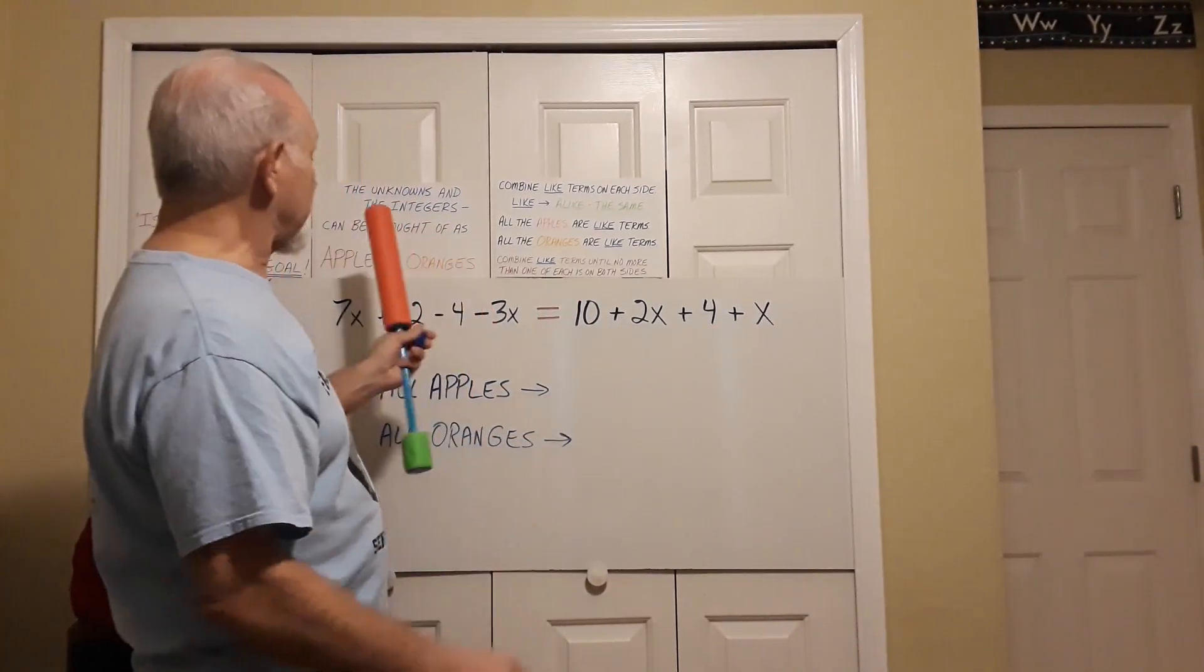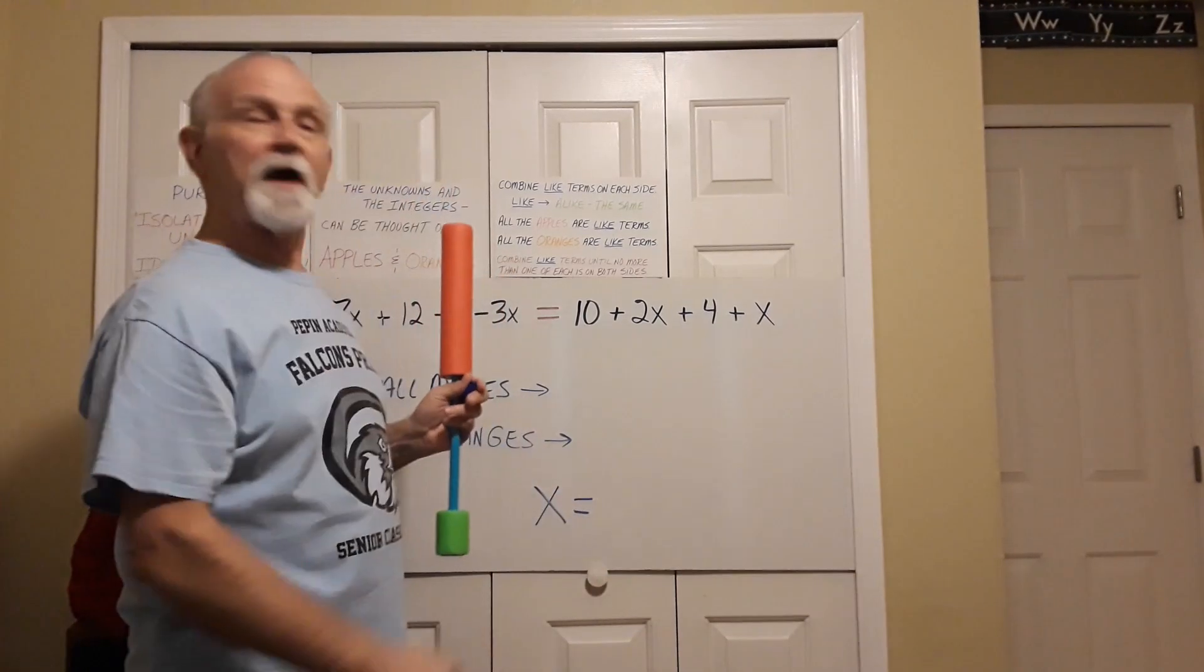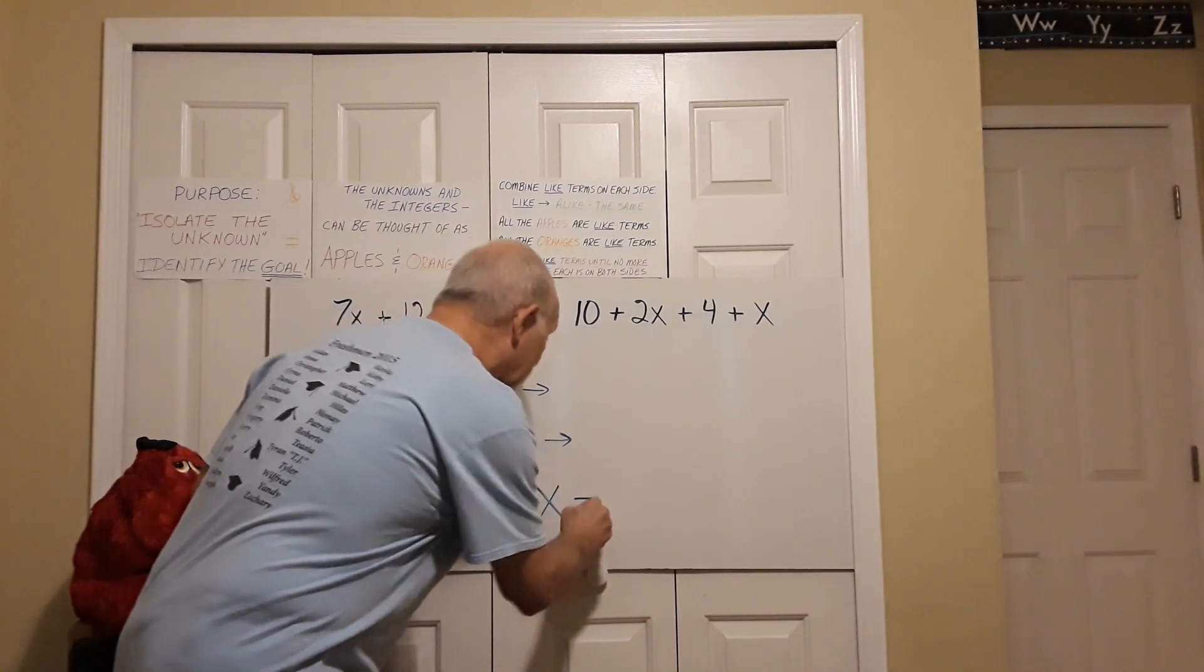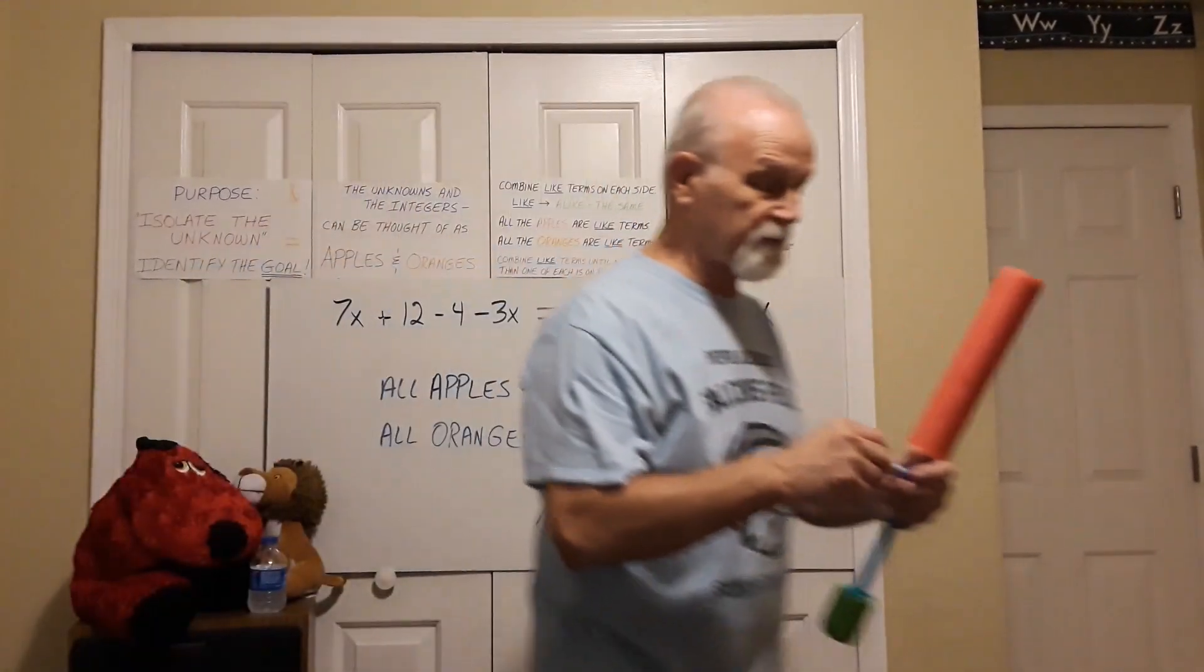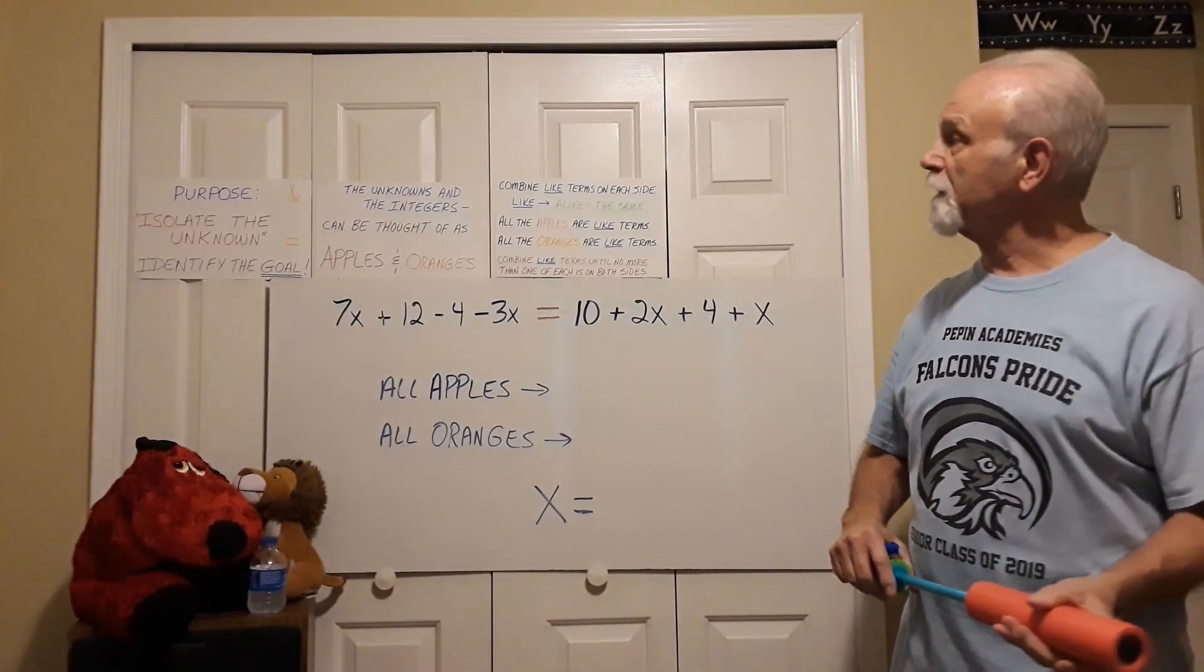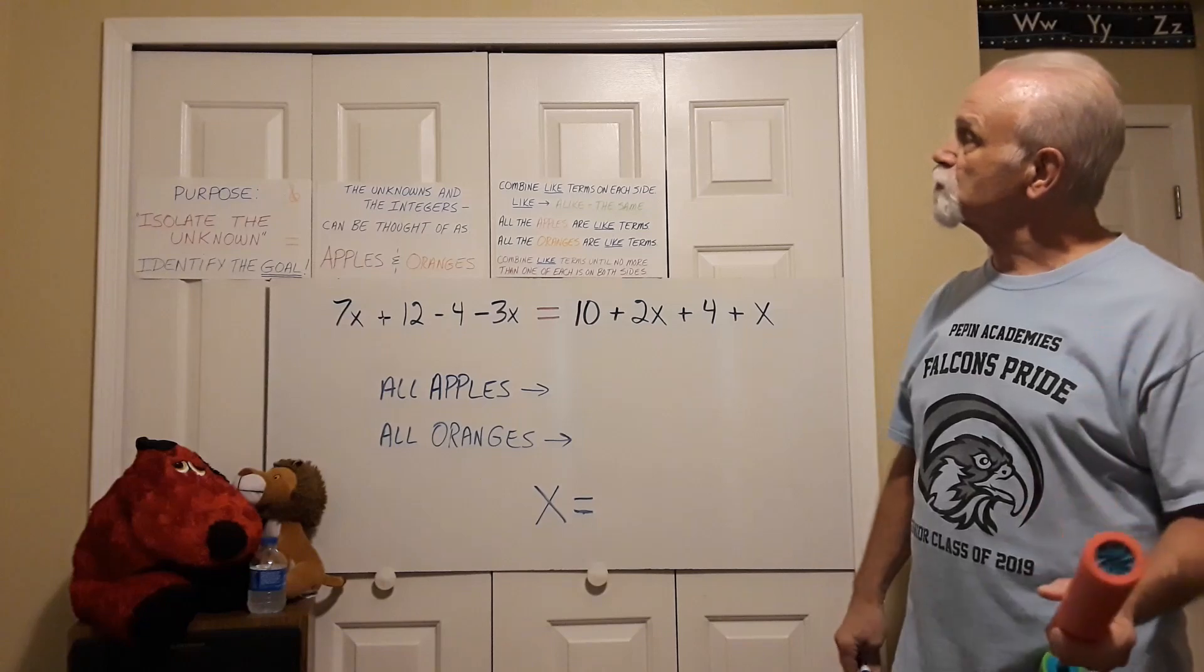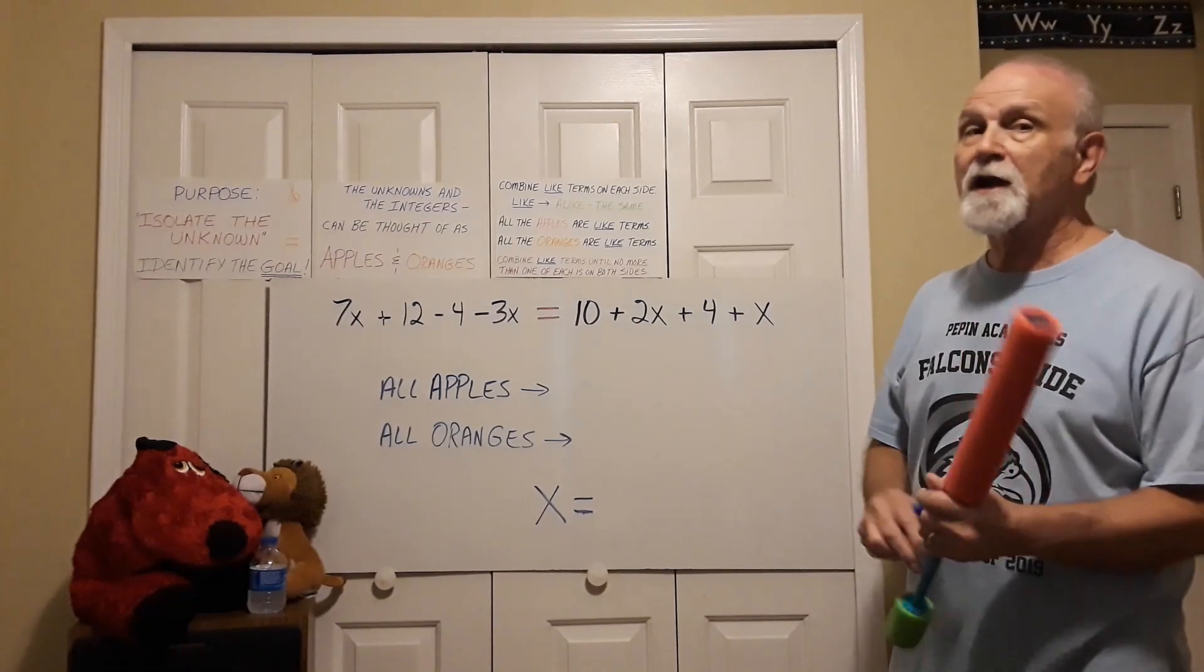So what is my goal? This is my goal: x equals. I'm going to write it right down there, and that's how I want you to do it too when you solve equations. I want you to identify the goal. Now, the next one is we talked about the unknowns and the integers. How we cannot combine them.